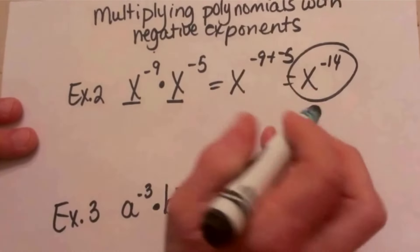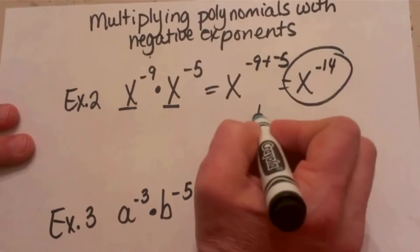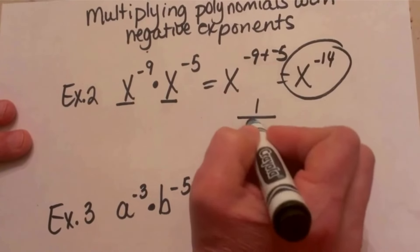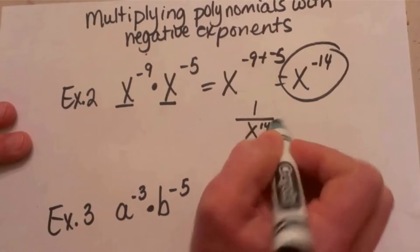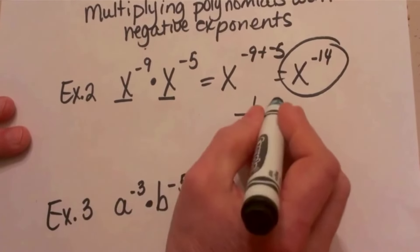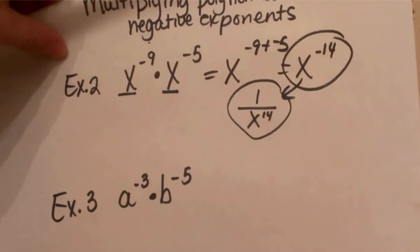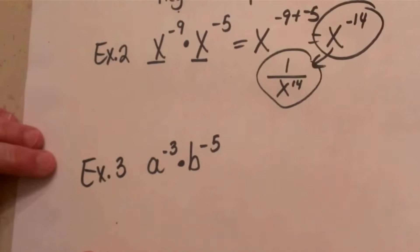The only other thing you can do is if you need to write it as a positive exponent, you can take x and write it on the bottom of a fraction, so that would be 1 over x to the 14th. You can write it with a positive exponent in the denominator. Let's look at our second example.